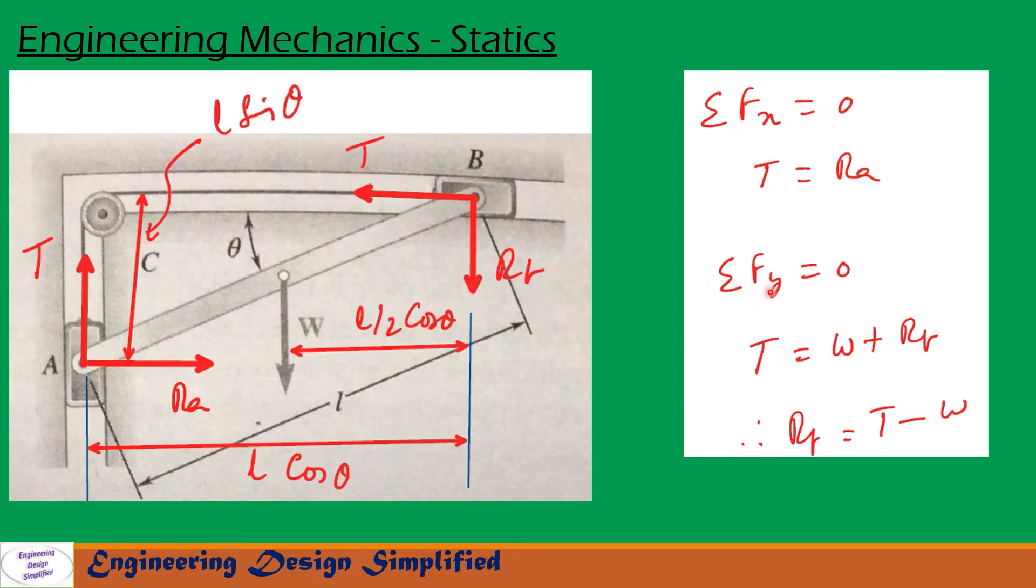Similarly, let us resolve forces along y direction. Sigma Fy = 0. Weight W is acting vertically downwards plus RB is acting vertically downwards from this point. This plus this equals this tension T. So T = W + RB, and RB = T - W.